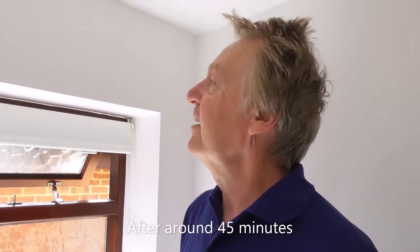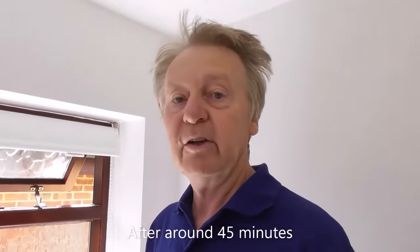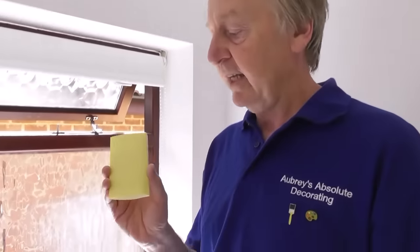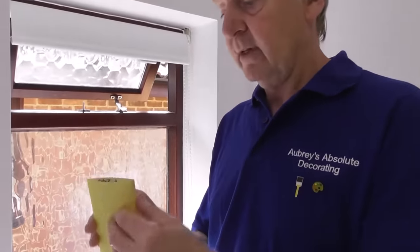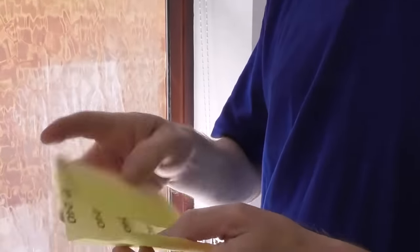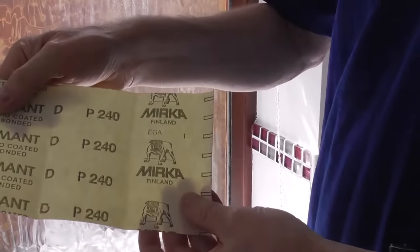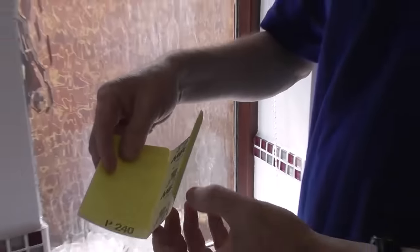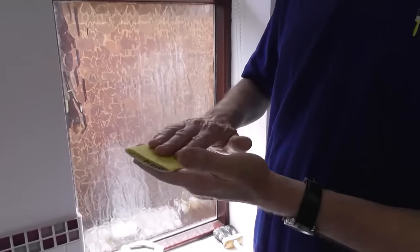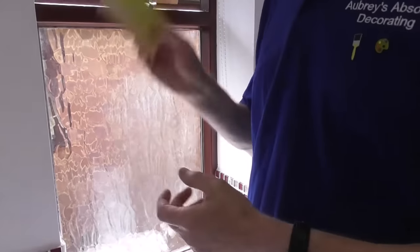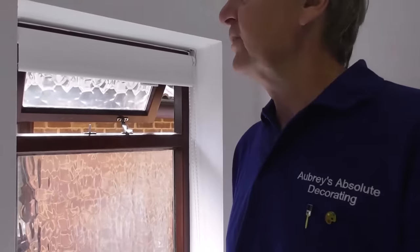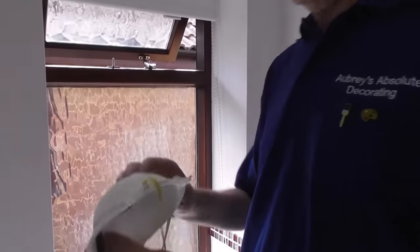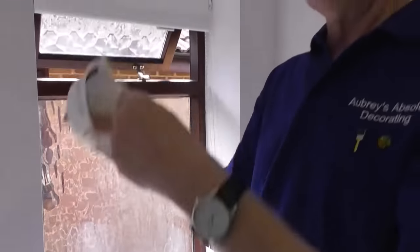Okay so I think that filler's nice and dry now that we applied earlier in that hairline crack. And to rub it down I'm going to be using this abrasive paper. You can see it's 240 grade aluminium oxide paper. So I fold it over twice so you get a better grip on it when you're rubbing down. But before I start I need to put a mask on so I don't breathe in any of the dust.